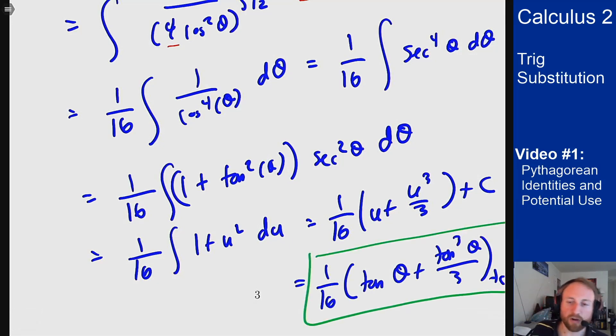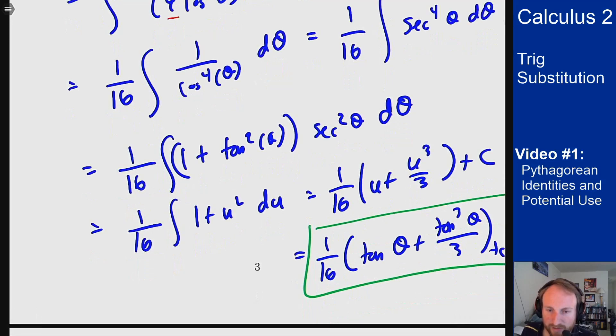Now, we're not quite done yet, and we'll go into more of this process in detail later. But the point is, my original integral was in terms of x, so my answer needs to also be in terms of x. So I want to get this back to being in terms of x.